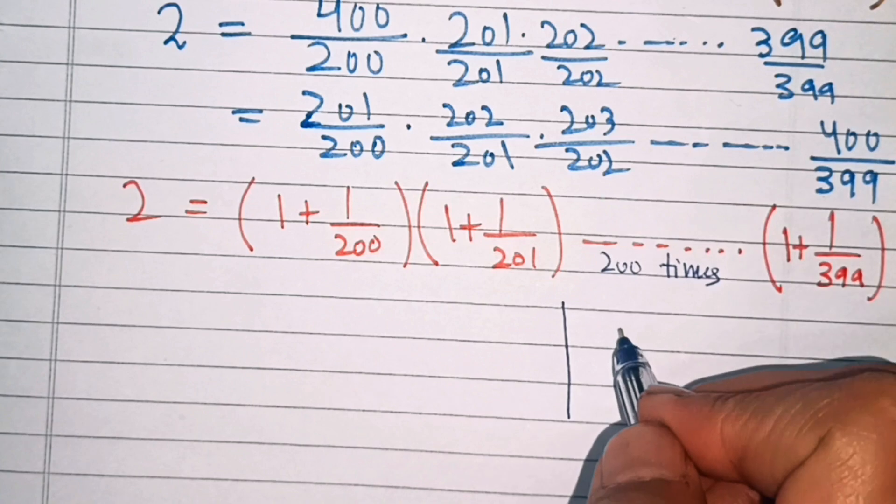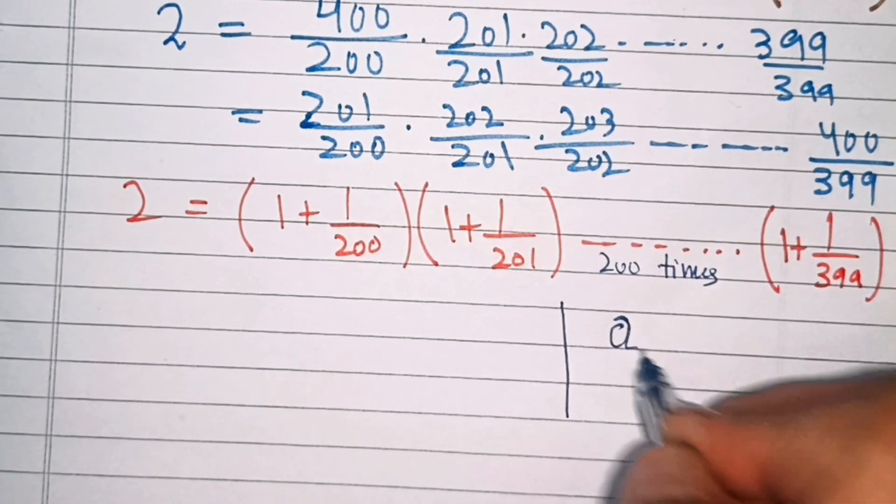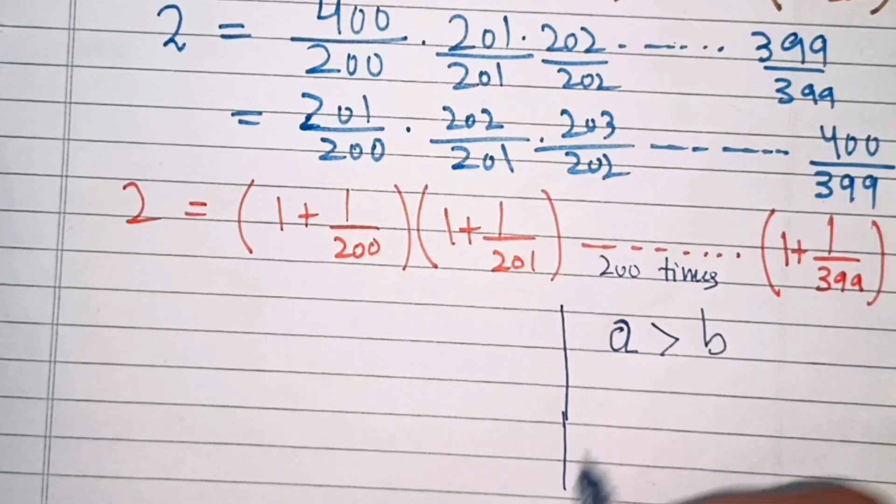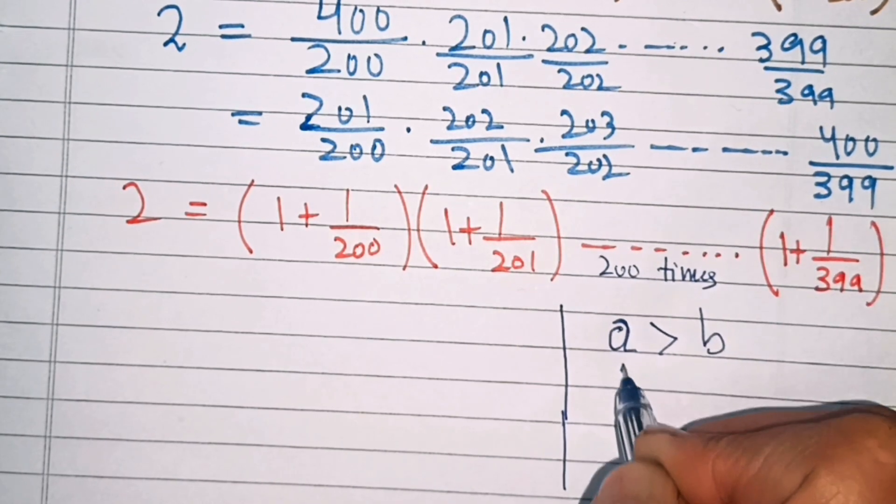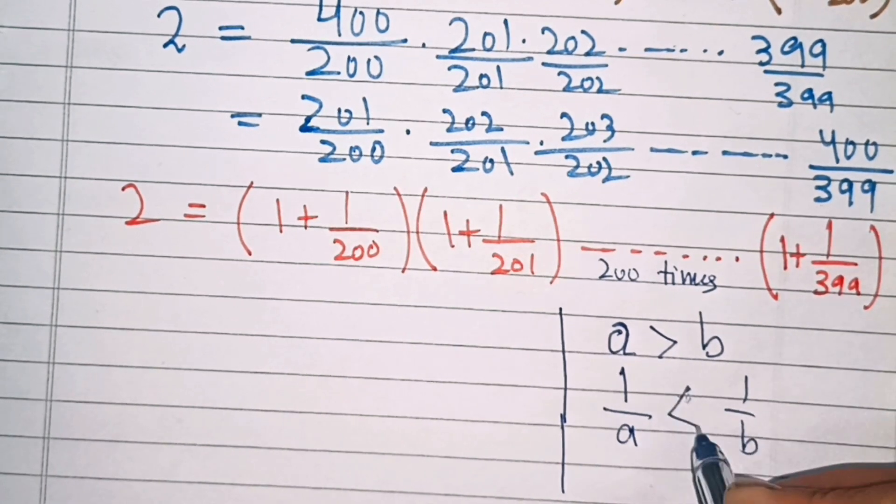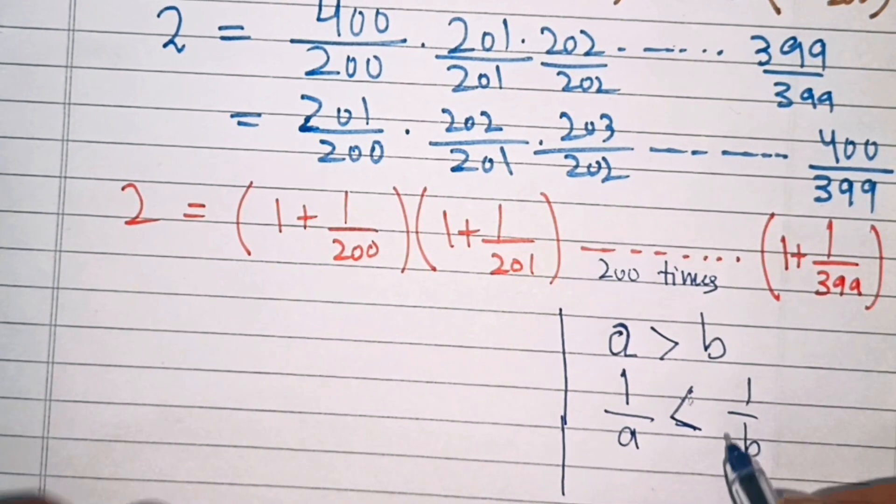You should remember that rule here. That is, if a and b are two numbers and a is greater than b, so when we reciprocal these numbers, that is 1 over a and 1 over b, 1 by a is less than 1 over b.